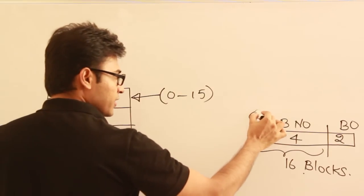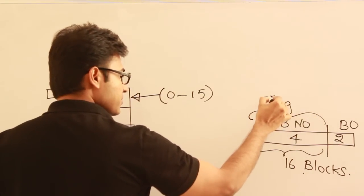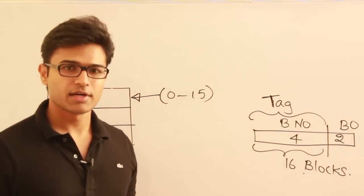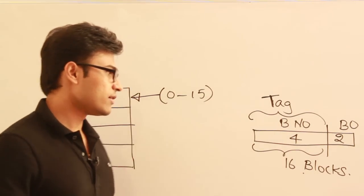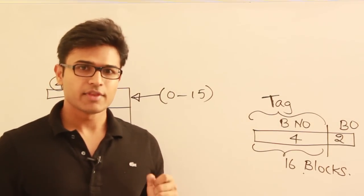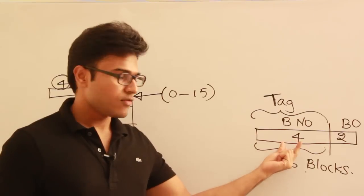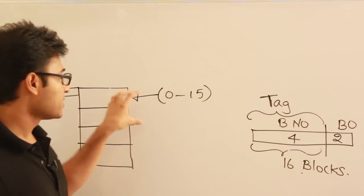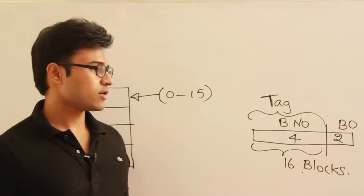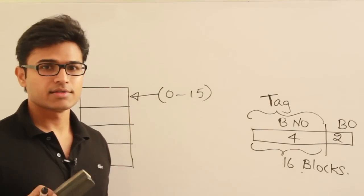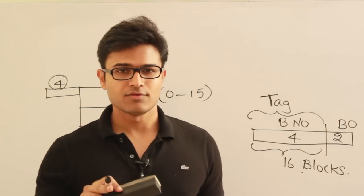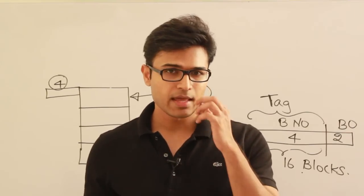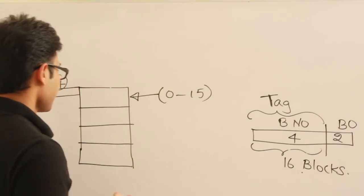For the tag, we need 4 bits — the entire block number must be present as the tag. The reason is simple: we don't know which block is present in which line, so the only way to identify it is to store the entire block number. Earlier in direct mapping, we knew exactly which block goes to which line, so we stored only partial information. Here, there's no such constraint, so the tag bits are larger. One advantage of associative mapping is there will be no conflict miss — as long as there's empty space in cache, we never need to replace a block.